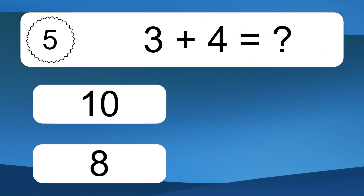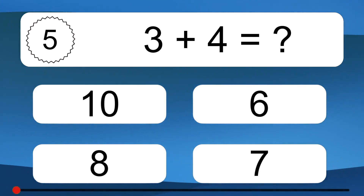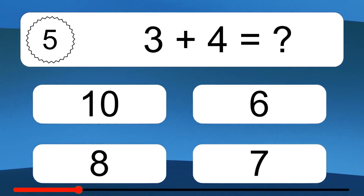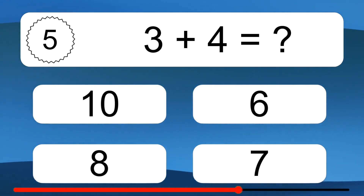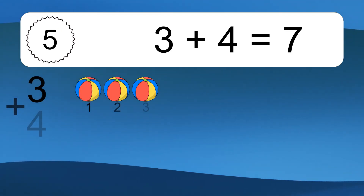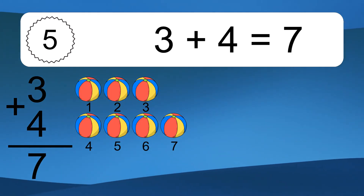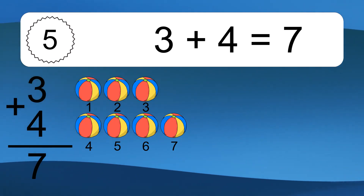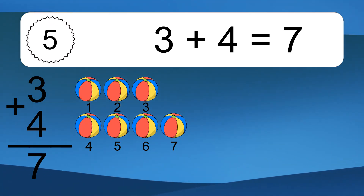3 plus 4 equals what? 3 plus 4 equals 7. Let's count it: 1, 2, 3, 4, 5, 6, 7.